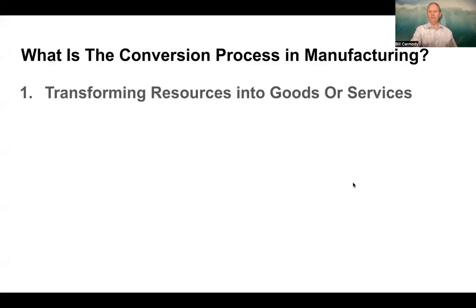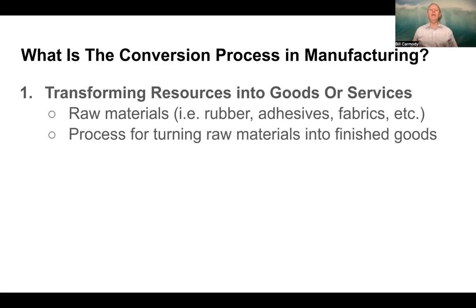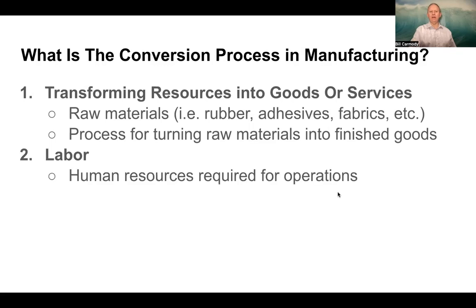So what is the conversion process in manufacturing? We're transforming resources into goods or services — like raw materials such as rubber, adhesives, and fabrics. The process for turning those raw materials into finished goods is the conversion process in manufacturing. But it's not just the raw goods; it's also the labor — the human resources required for operating the plant.